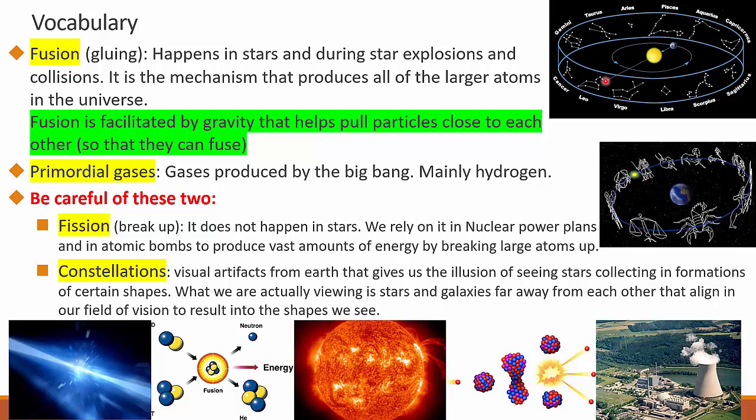Now a few images here. This is constellations as seen from the Earth. Fission: a large atom breaks up into smaller atoms and energy in nuclear power plants. Fusion is when several nuclei fuse together. In this case, we have two fusing together to produce the bigger one.